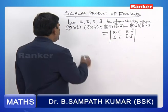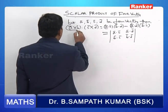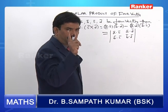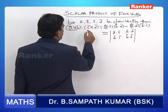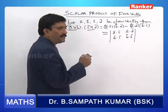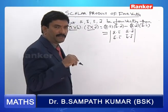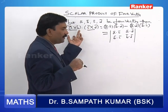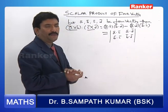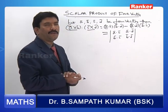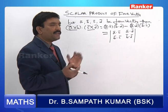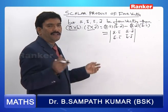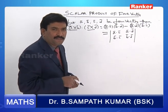Now, starting with one vector, the cross product of two vectors gives one vector, and the cross product with another vector gives another vector. After getting two vectors, you take the dot product, which gives a scalar — it is not a vector.